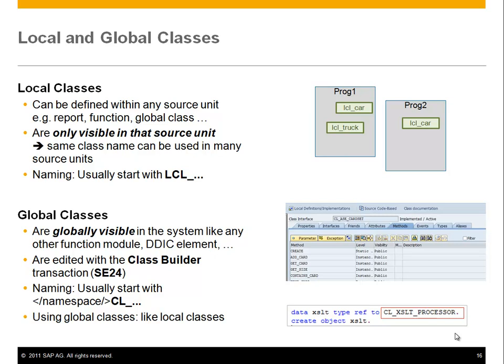You use a global class just by its name — you declare a reference to it, ref to whatever. In the example below you see an XSLT processor, CL_XSLT_PROCESSOR. You do create object and you can then use whatever this object offers.